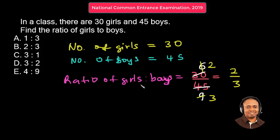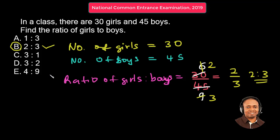So the ratio of girls to boys is 2 to 3. The answer, option B, is the right answer. Thank you for watching. See you in the next video. Bye-bye.